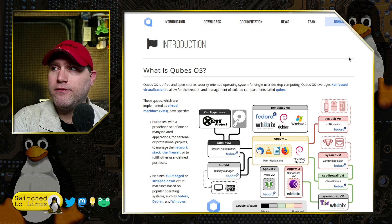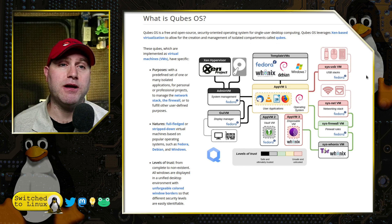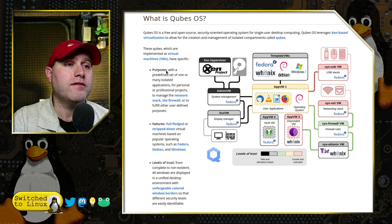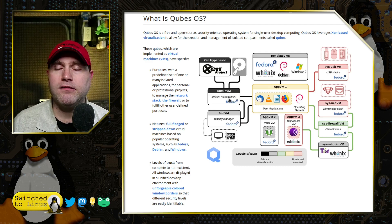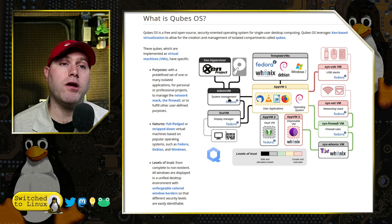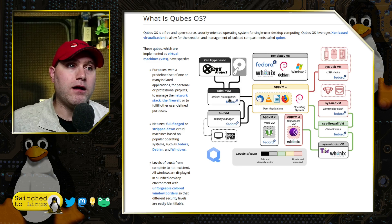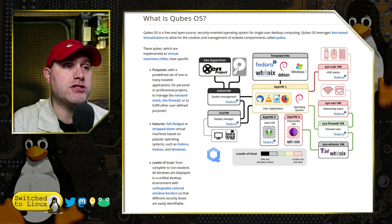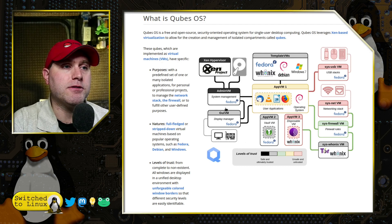I'm going to click over to the introduction page because it gives a layout of the system. On the far left we have basic information: a Xen hypervisor. Your hard drive feeds into an administrative VM — this is where all system administration, updates, and security management goes. This is where you choose which network stacks are in use. There are two completely separate network stacks: a clearnet network stack and a Tor-based network stack. You choose which VM connects to which network stack, all managed inside the admin VM. There's also a GUI VM where your display manager is set, which sends everything out to your graphics.